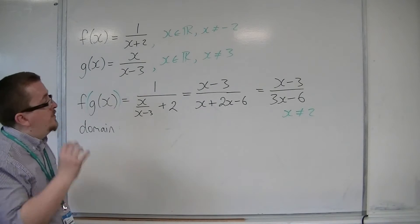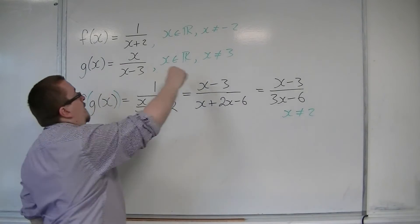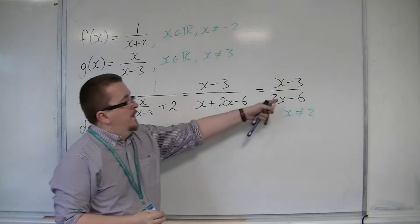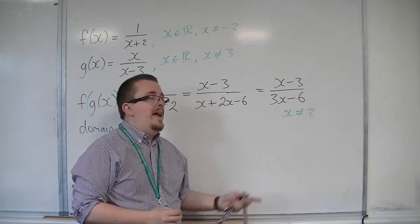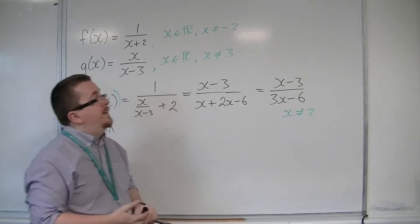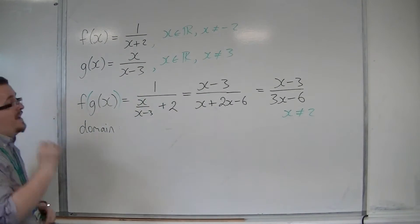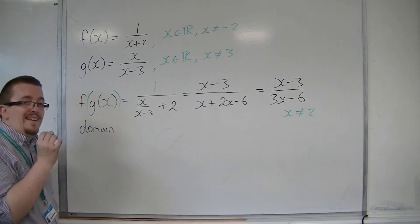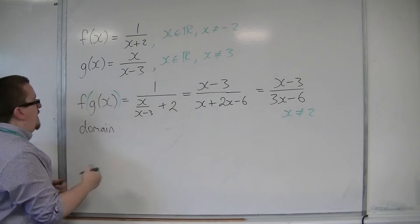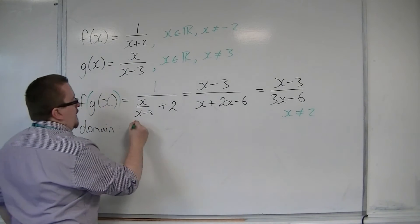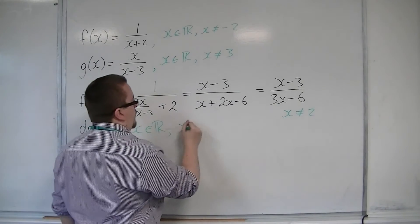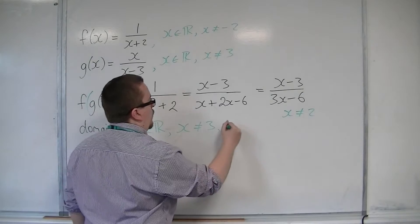What's strange here, or apparently strange, is that I've got x is not equal to 3. But it seems to work here — if x were 3, I would get a valid number. However, that is a restriction that's been put on by g of x initially. So what I'm saying is that the domain is that x can be any real number, apart from x equals 3 or 2.